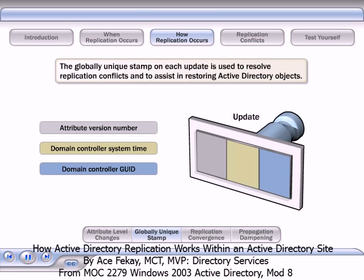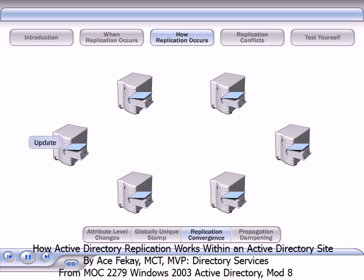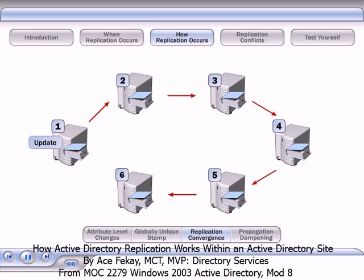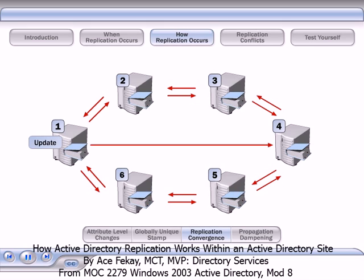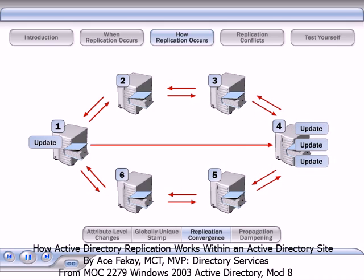The globally unique stamp on each update is used to resolve replication conflicts and to assist in restoring Active Directory objects. Each update in Active Directory eventually propagates to every domain controller in the site that hosts the partition on which the update was made. This complete propagation is called convergence. Active Directory generates multiple paths to propagate updates between domain controllers to provide fault tolerance and improve performance. However, these multiple paths can result in the redundant replication of updates to the same domain controller along different replication paths. To prevent such redundant replication, Active Directory replication uses a propagation dampening scheme.